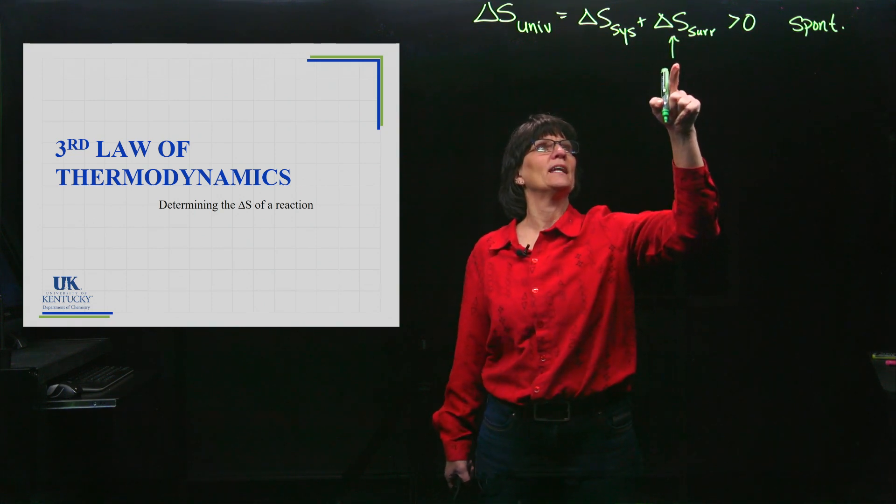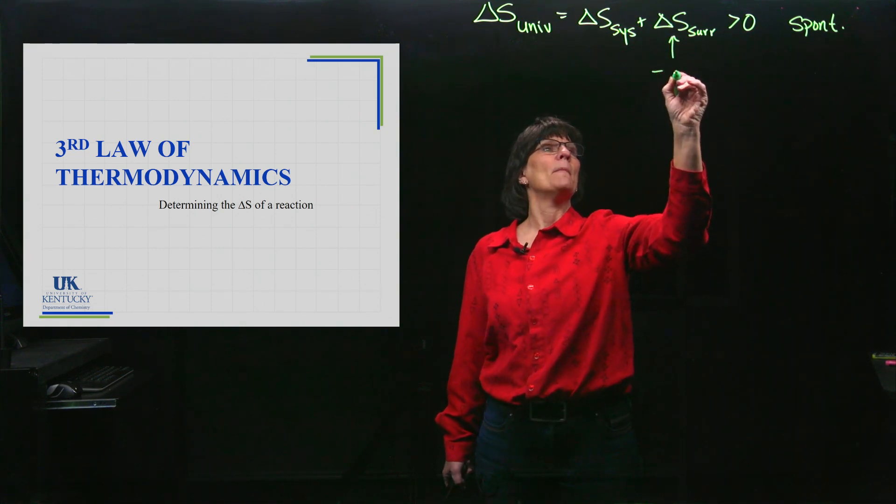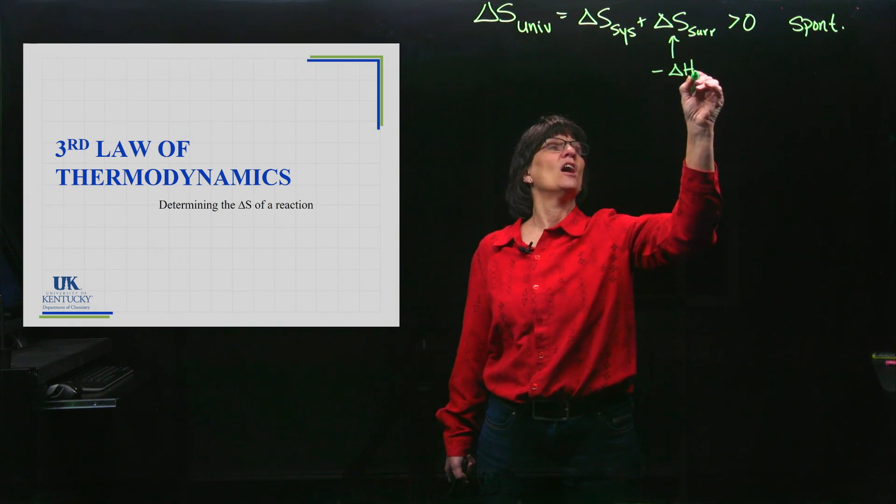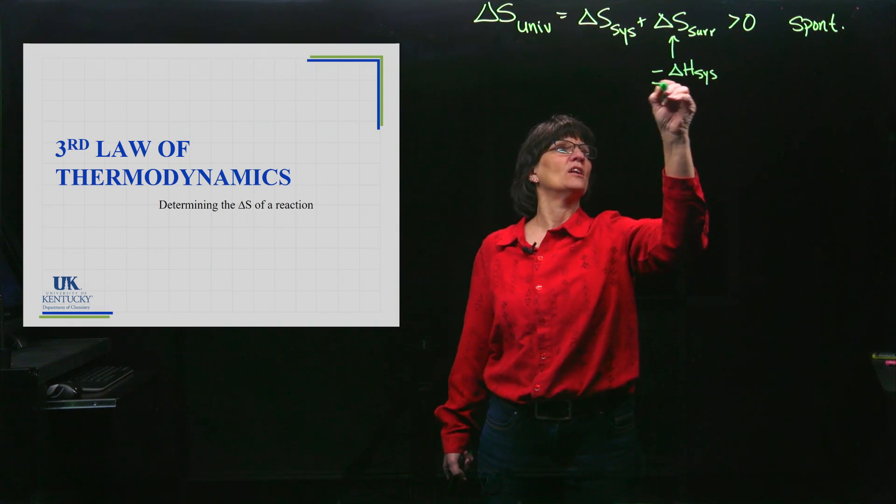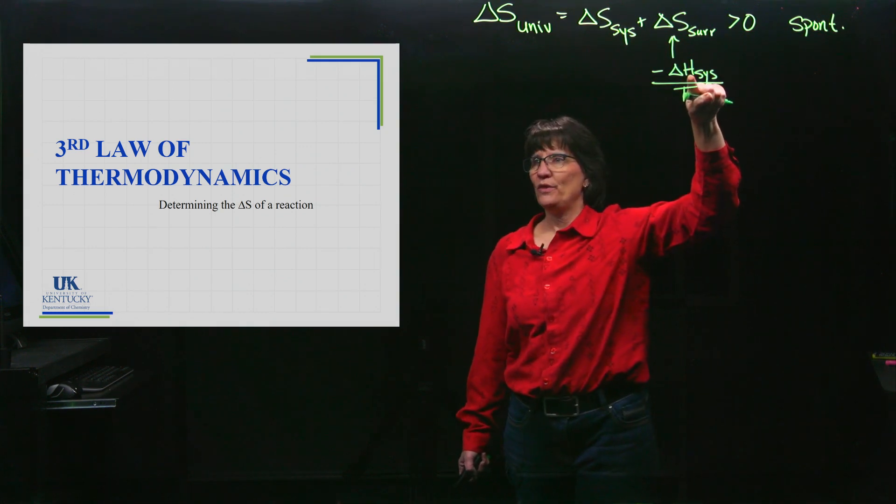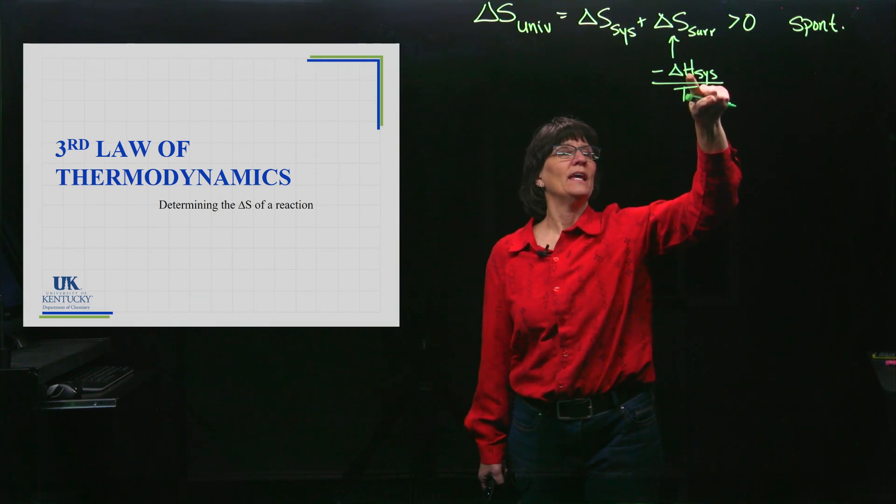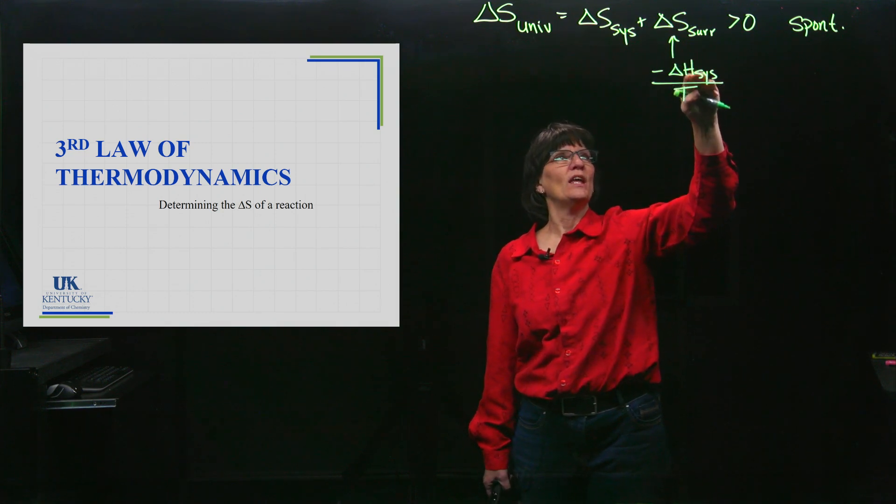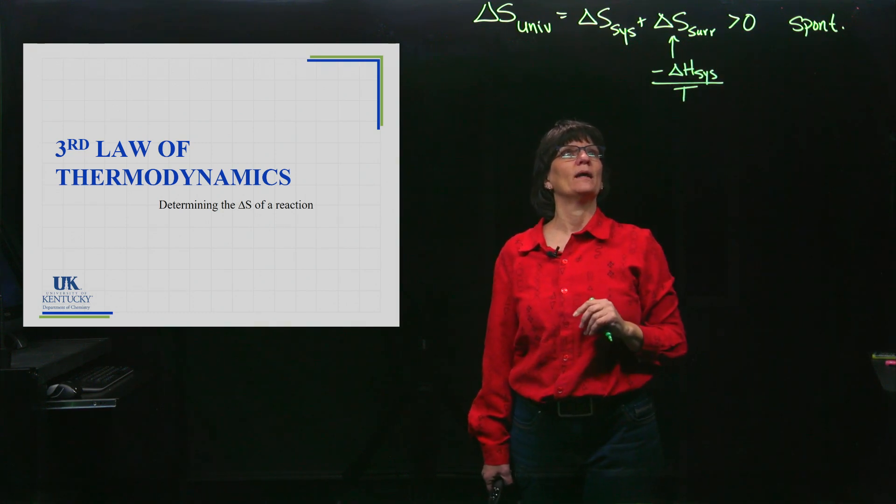Also remember that in a couple lessons ago, I taught you how to calculate the ΔS of the surroundings by taking the negative ΔH of the system (the reaction) and dividing by the temperature in Kelvin. We learned how to do this in thermochemistry, and now we can use that information to get the ΔS of the surroundings.